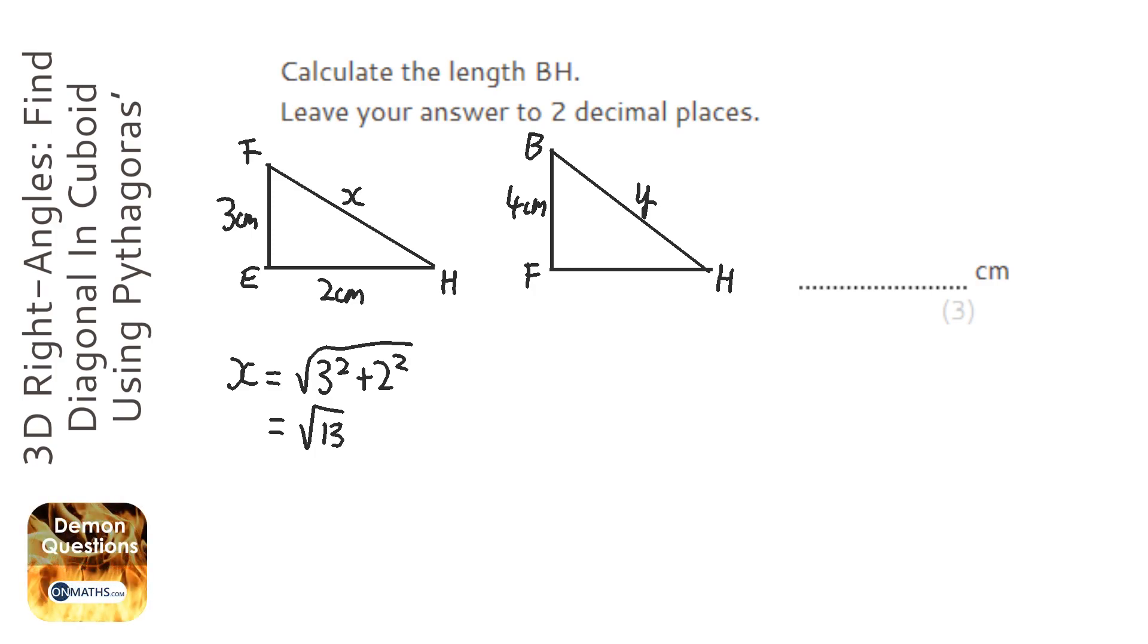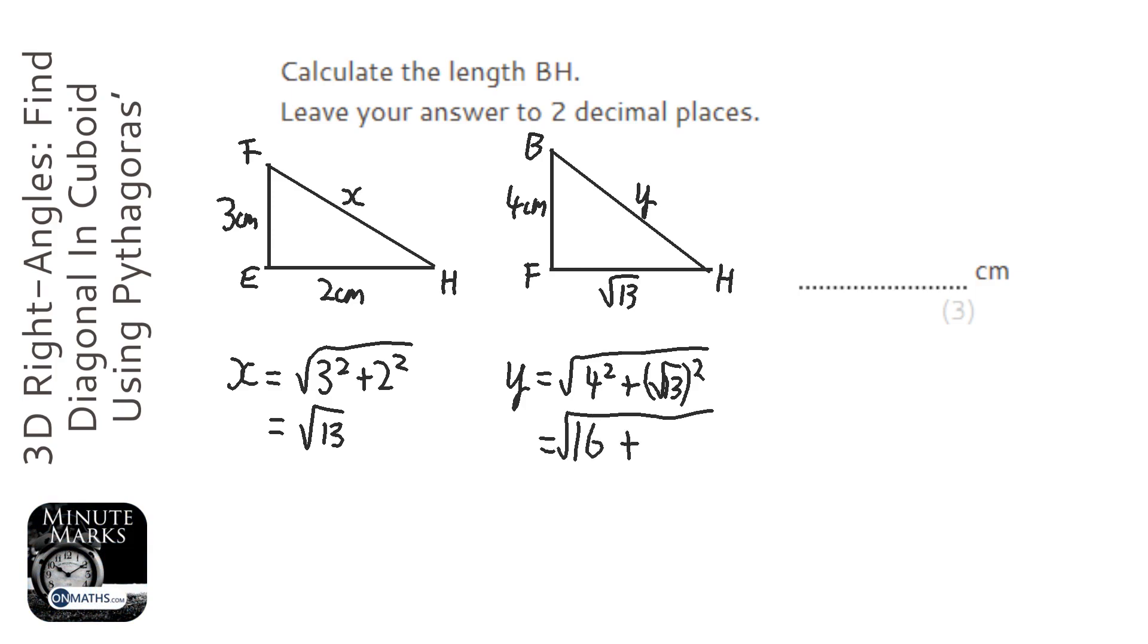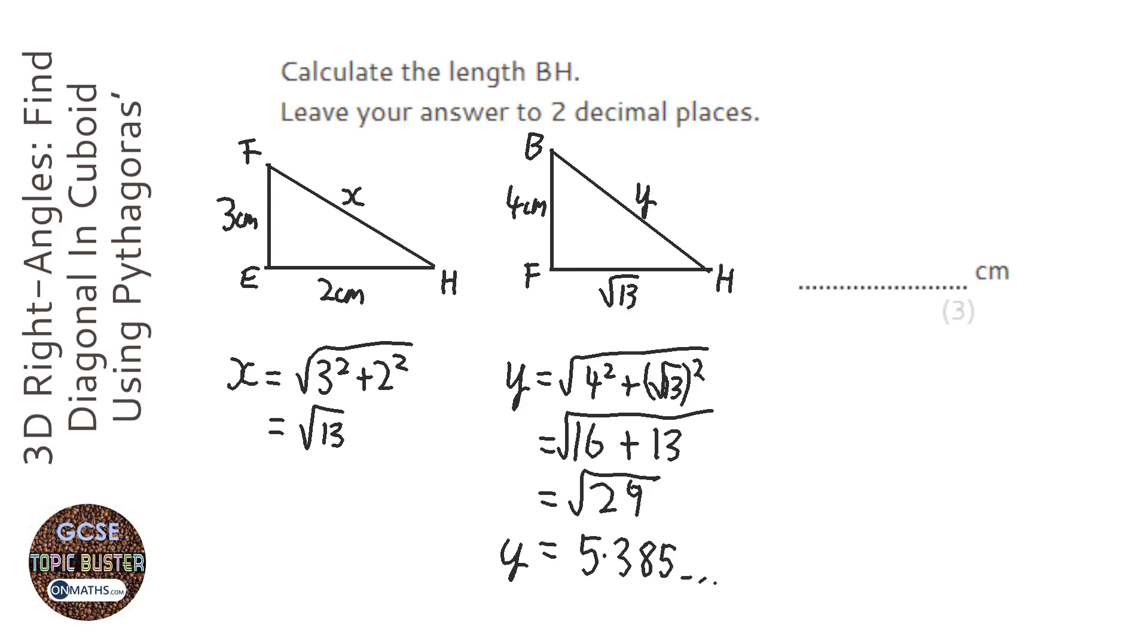To work out what y is, we also use Pythagoras' theorem. So it's going to be 4 squared plus root 13 squared. 4 squared is 16, plus root 13 squared is just 13, so that's 29. On the calculator, root 29 equals 5.385, so to two decimal places that's 5.39.